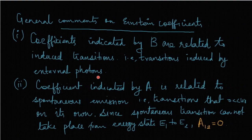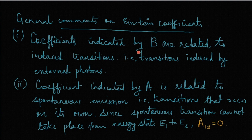Here are some general comments on Einstein coefficients. The coefficients indicated by B are always related to induced transitions, that is, transitions induced by external photons. B12 represents the transition induced by a photon from lower energy level E1 to higher energy level E2.